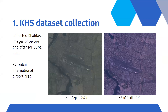KhalifaSat imagery consists of high-resolution images with approximately one-third meter accuracy. Here we have two images of an area in Dubai — one from 2020 and one from 2022. We collected images of different areas in Dubai and took two time frames of the same geographical area to build the dataset.